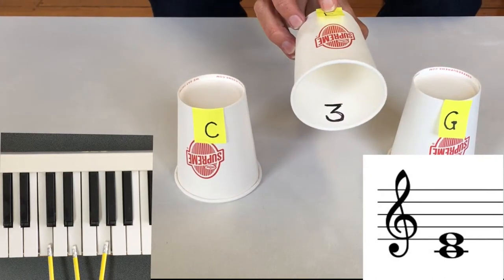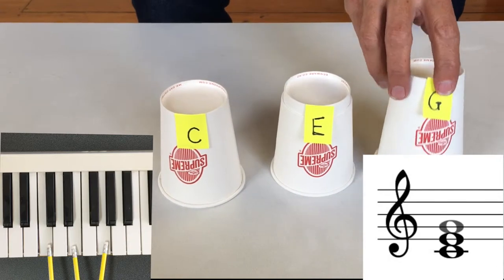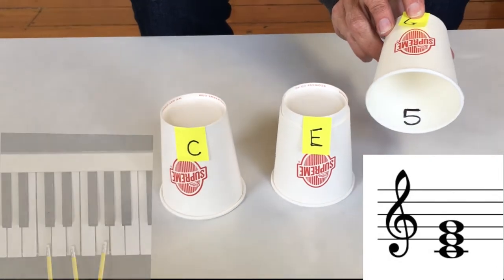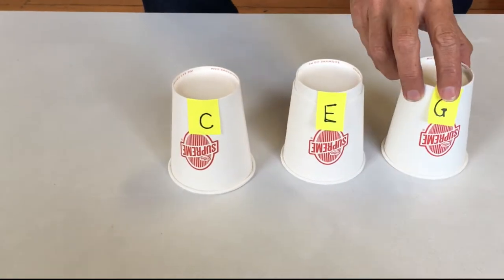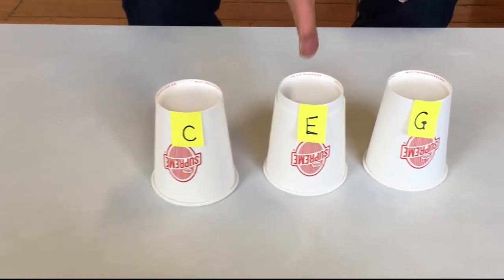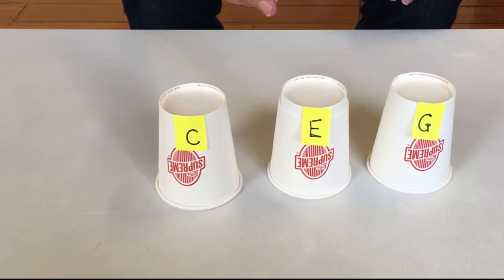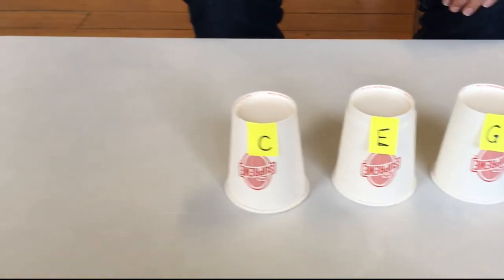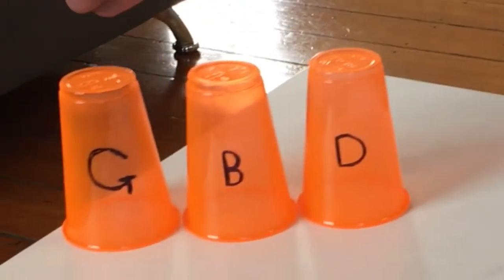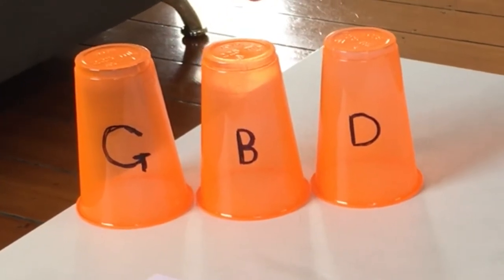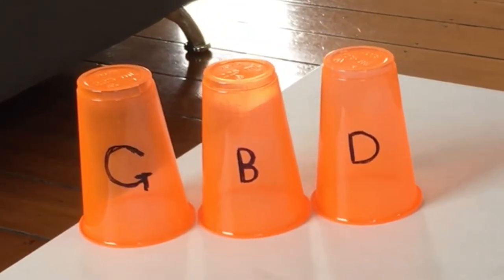Root, third, fifth. Every chord has a root, third, and fifth. Over here is the G chord with G as the root, B is the third, and D is the fifth.